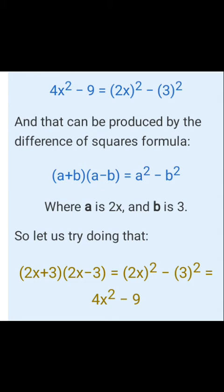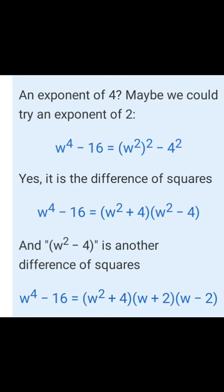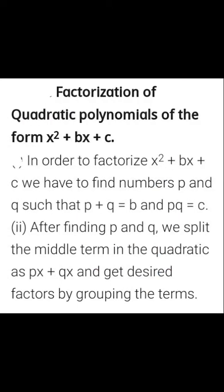Using identities: for example, w⁴ − 16 can be written as (w²)² − 4². Applying a² − b² formula, it splits into two brackets: (w²+4)(w²−4). Then w²−4 = (w+2)(w−2), giving the full factorization: (w²+4)(w+2)(w−2). You have already studied these in class 7 and 8.